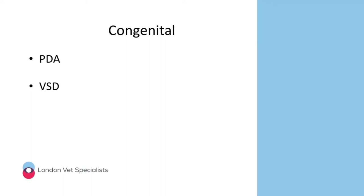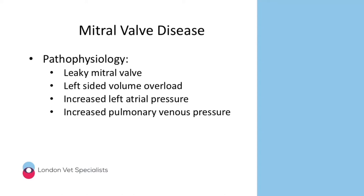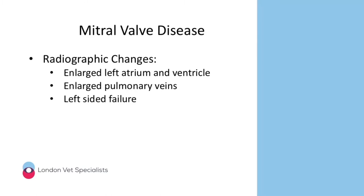Let's start with mitral valve disease. We've all come across Cavalier King Charles Spaniels with heart murmurs and leaky mitral valves. A leaky mitral valve leads to left-sided volume overload, increasing pressure within the left atrium and the pulmonary veins, eventually leading to left-sided failure. On thoracic radiographs we'll see an enlarged left atrium and ventricle, big pulmonary veins, and if the patient has decompensated, signs of left-sided failure.